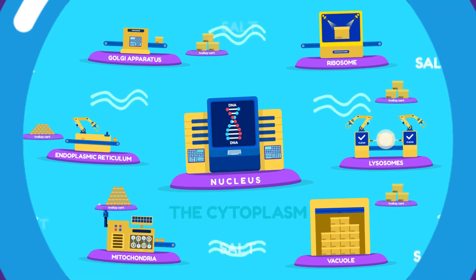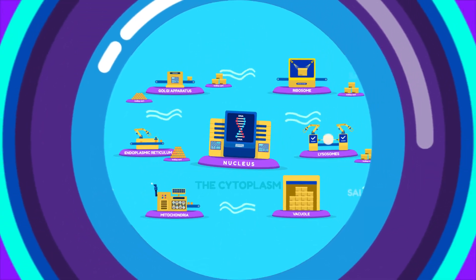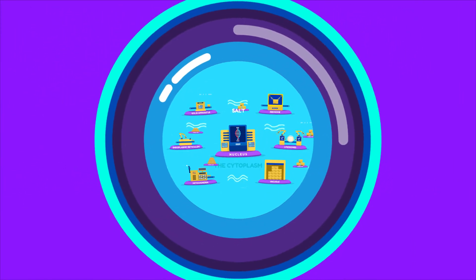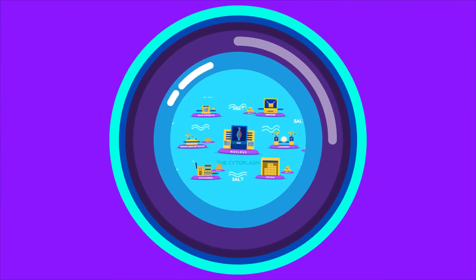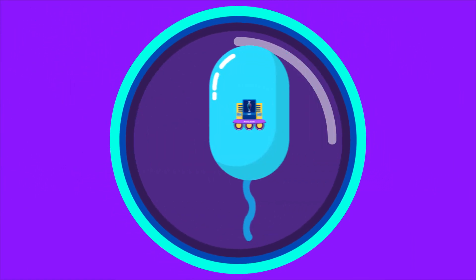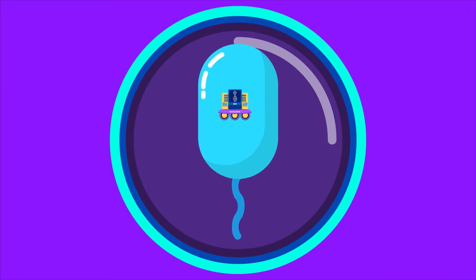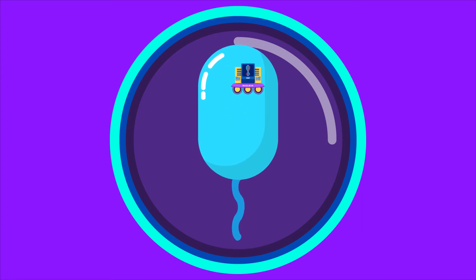The cytoplasm is also continuously streaming like waves in a calm lake. In short, I am like a fully functional factory, with different departments following different functions to make it run smoothly. In prokaryotes, I don't have membrane-bounded organelles. My nucleus is freely suspended in cytoplasm.